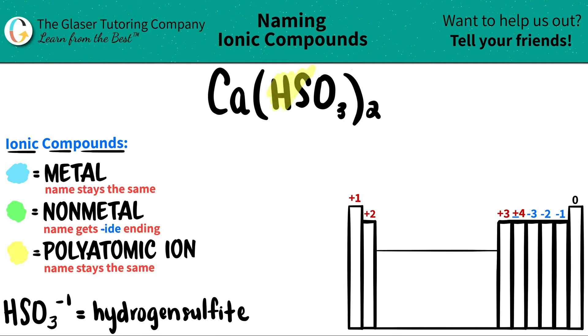So here's the polyatomic HSO₃, and then calcium is the only thing that's left over. And calcium is right here. All of group two are metals, so calcium is a metal.